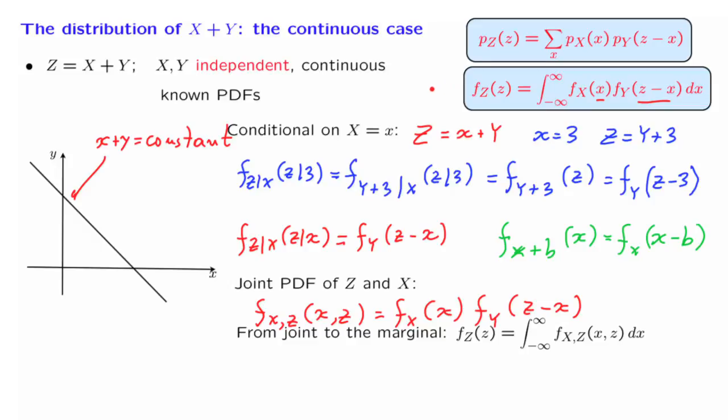In terms of the mechanics of carrying out the calculation of the convolution, the mechanics are exactly the same as in the discrete case. If you want to solve a problem graphically, what you will do is to take the PDF of Y, flip it horizontally, and then shift it by an amount of little z, cross multiply terms, and integrate them out.